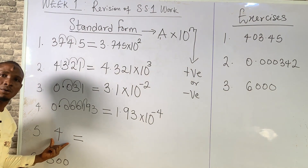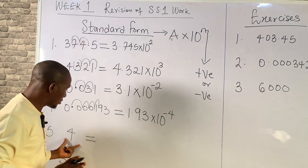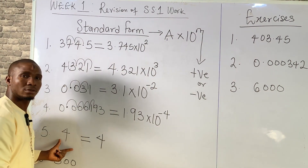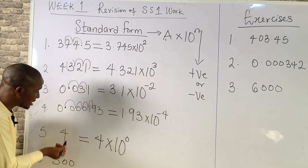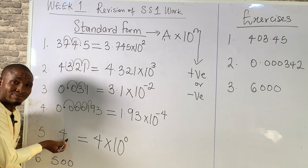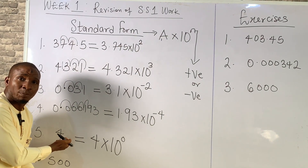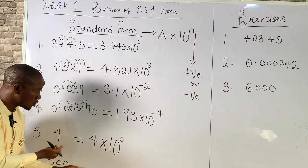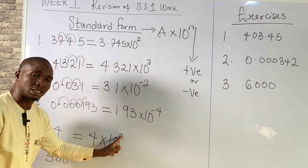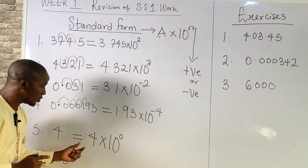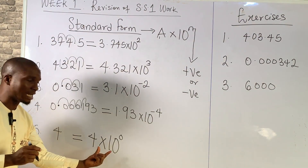Now look at this: the number 4 is standing alone. It's going to be 4 times 10 raised to power 0, because the decimal point is already between the first number and any other number that should be placed there — we don't need to move it. Remember, 10 raised to power 0 gives you 1, so the number remains the same. This is how to express any single-digit integer in standard form.